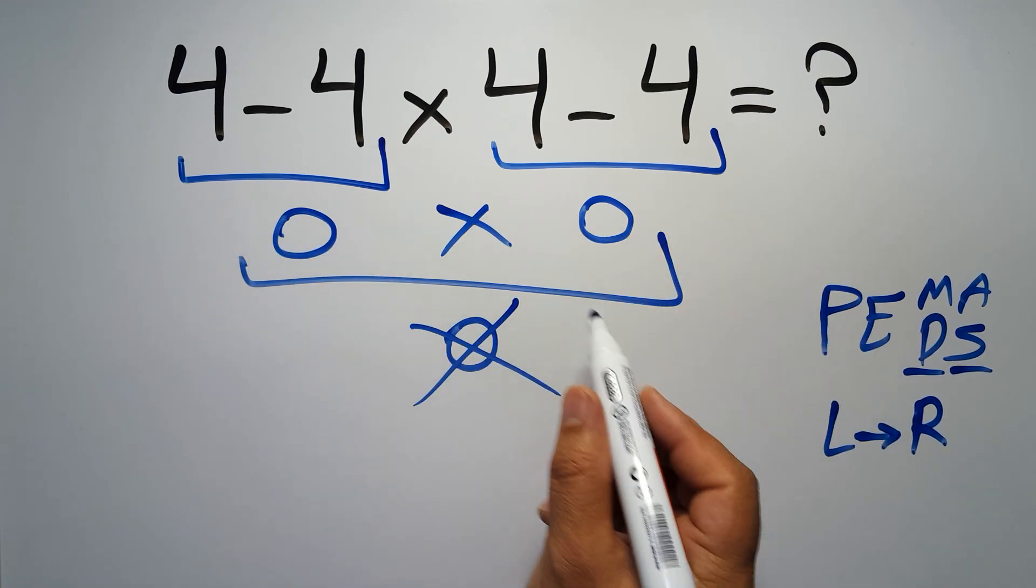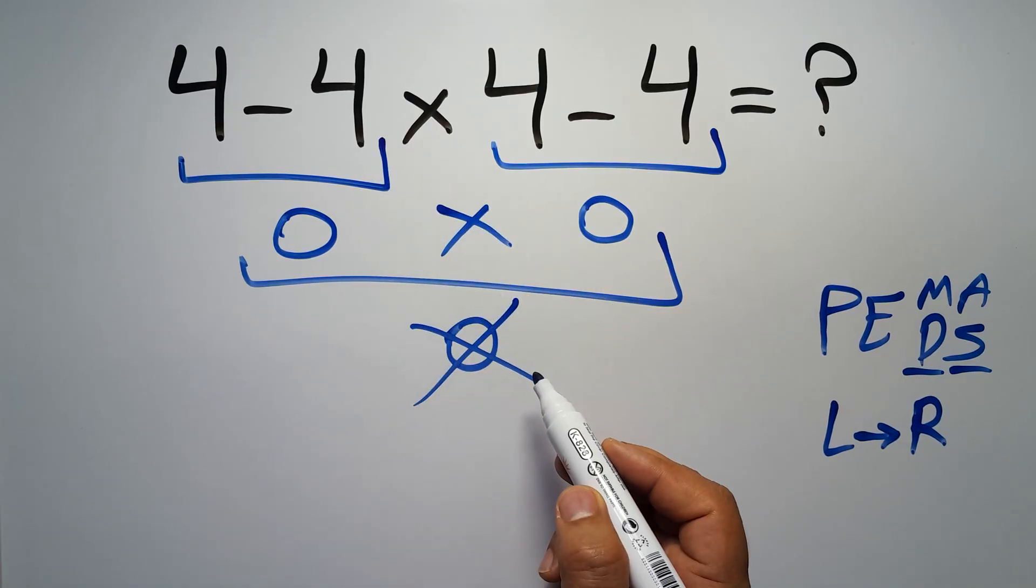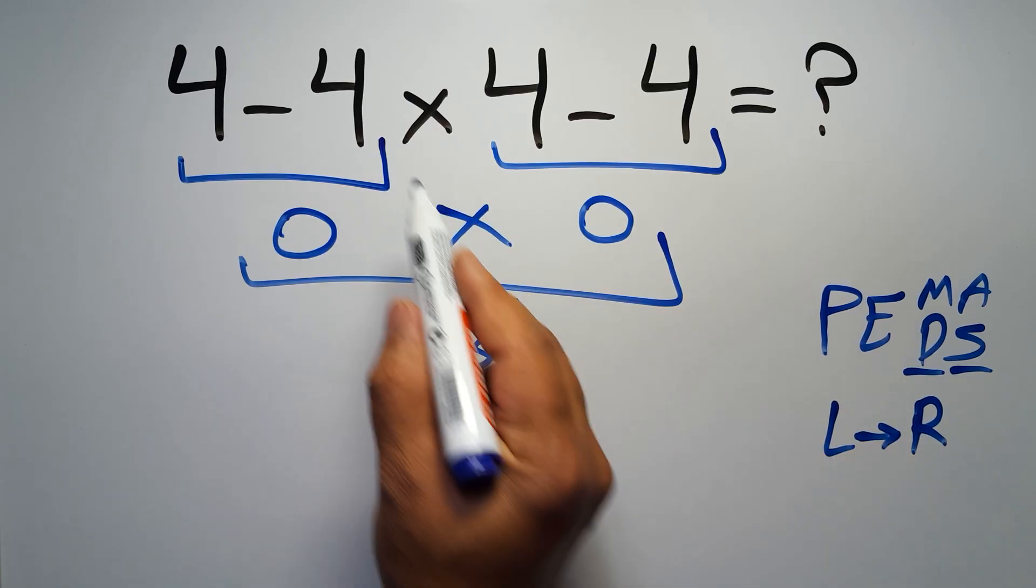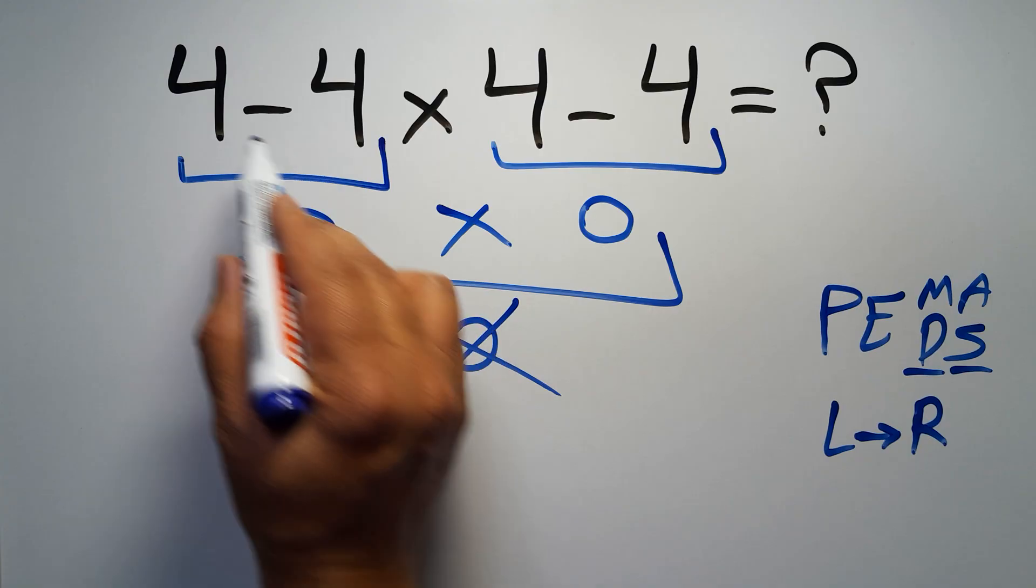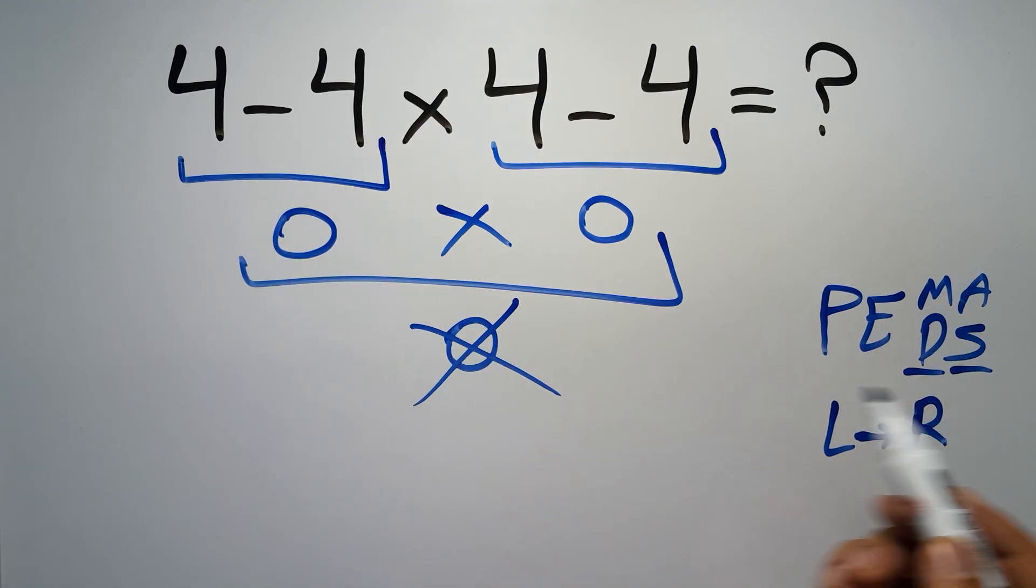In this expression we have two subtractions and one multiplication. According to the PEMDAS, multiplication has higher priority than subtraction, because multiplication comes before subtraction.